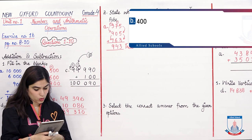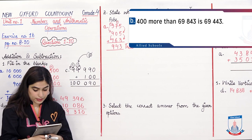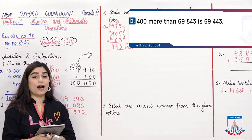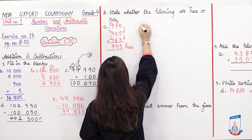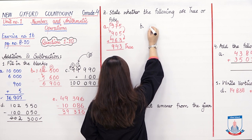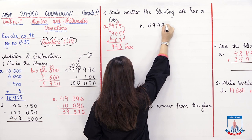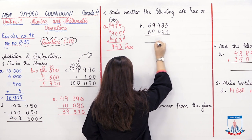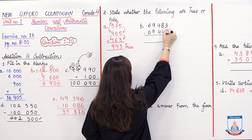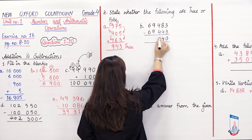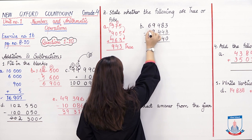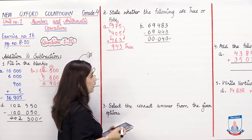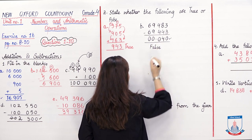Part B: 400 more than 69,843 is 69,443. When we say 'more than', we check the difference between the two values. Subtracting: 69,843 minus 69,443 — ones: 3 minus 3 is 0, tens: 8 minus 4 is 4, hundreds: 4 minus 4 is 0, thousands and ten-thousands cancel. The difference is 400, not 400 as stated — wait, the result is 400, but the statement says 69,443 is 400 more, which means 69,443 > 69,843 — that is FALSE. The answer is 40, not 400, so this statement is FALSE.